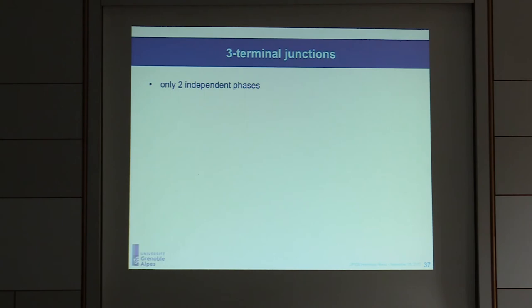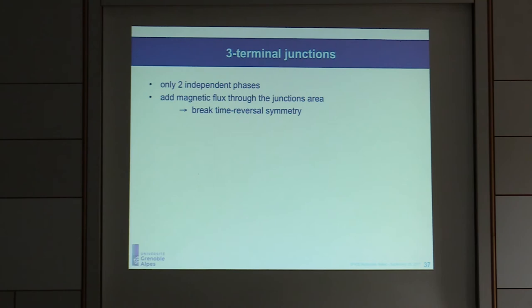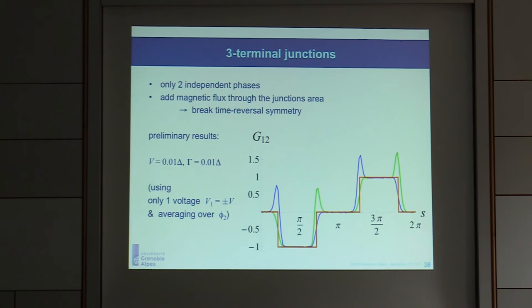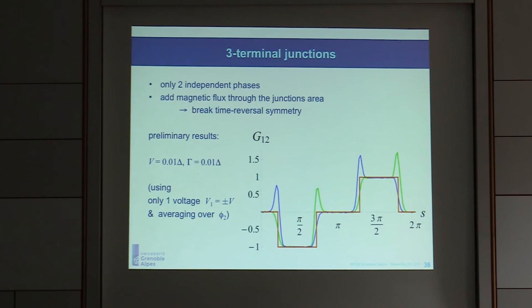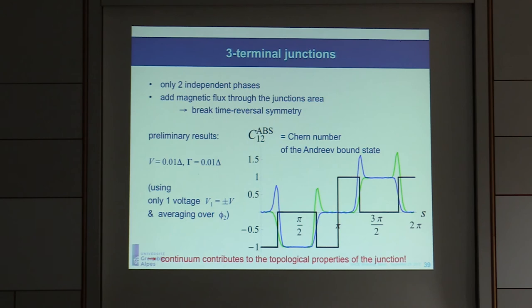In the beginning I said we need four terminals, but that's not completely true. You can have an additional parameter in a two- or three-terminal junction with only two independent phases by applying a flux through the junction area, giving the same physics with three parameters: the flux and two phases. One difference is that for four-terminal junctions we could relate topological properties to Chern numbers associated with bound states alone, whereas in this case the continuum also contributes — so it's not a property of a single state but of everything below the Fermi level.